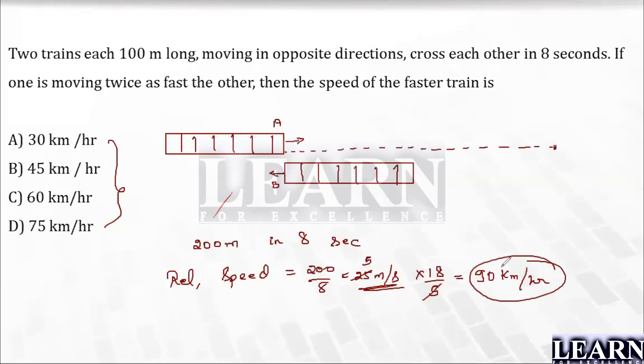Now they are told one train is twice as fast as the other. So if one train's speed is x and the other speed is 2x, this is nothing but 90. I can say 3x equals 90, which gives us x equals 30. Now they are asked what is the speed of the faster train. Speed of the faster train is 2x, which is nothing but 60 kilometers per hour.